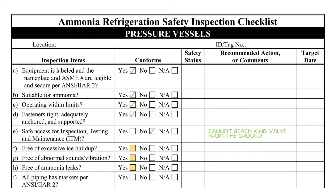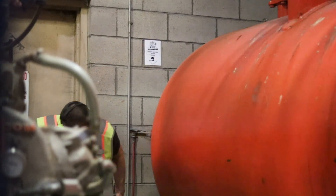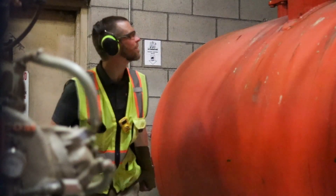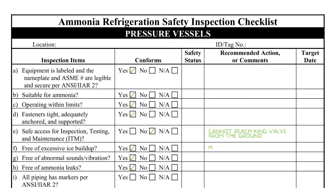The inspector must do a visual inspection of the entire vessel to verify the equipment is free from excessive ice buildup, vibration, and leaks. Where possible, the vessel should be inspected from all sides to avoid missing a deficiency. Item F asks specifically about ice buildup, which would only be relevant to vessels on the low side of the system.